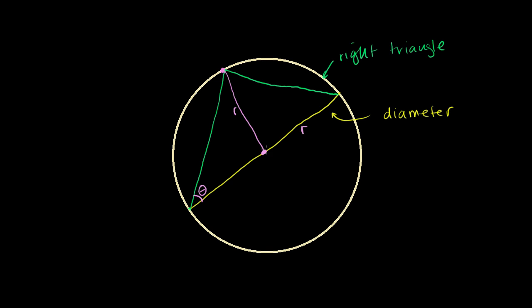We've learned several videos ago that this inscribed angle subtends this arc up here. The central angle that subtends that same arc is going to be twice this angle — we proved that several videos ago. So this is going to be 2 theta: it's the central angle subtending the same arc.